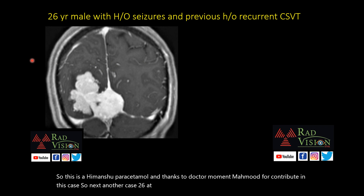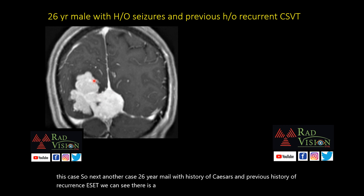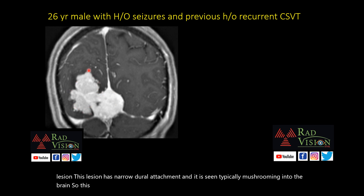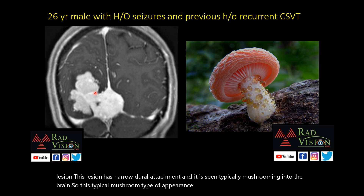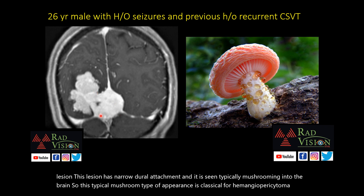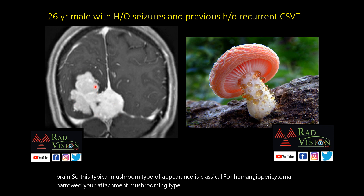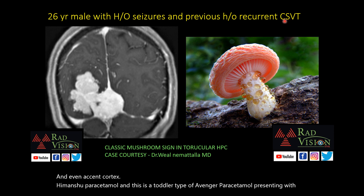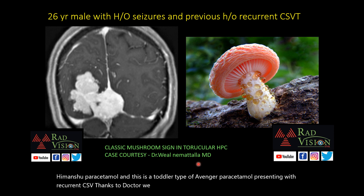Another case: a 26-year-old male with history of seizures and recurrent CSVT. There is an intensely homogeneously enhancing lobular mass lesion with a narrow dural attachment, typically mushrooming into the brain. This mushroom-type appearance is classical for hemangiopericytoma. Narrow dural attachment and mushrooming growth into the brain with adjacent cortex involvement favor hemangiopericytoma. This is a torcular hemangiopericytoma presenting with recurrent CSVT.